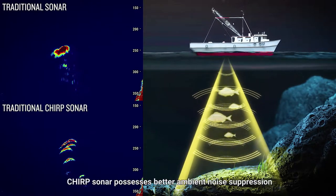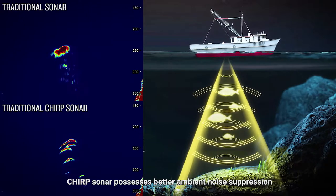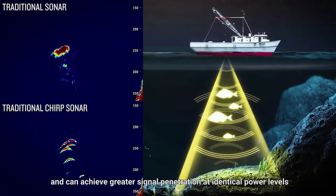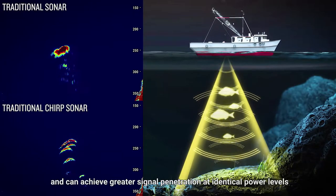Chirp sonar possesses better ambient noise suppression, reduced signal interference, and can achieve greater signal penetration at identical power levels.